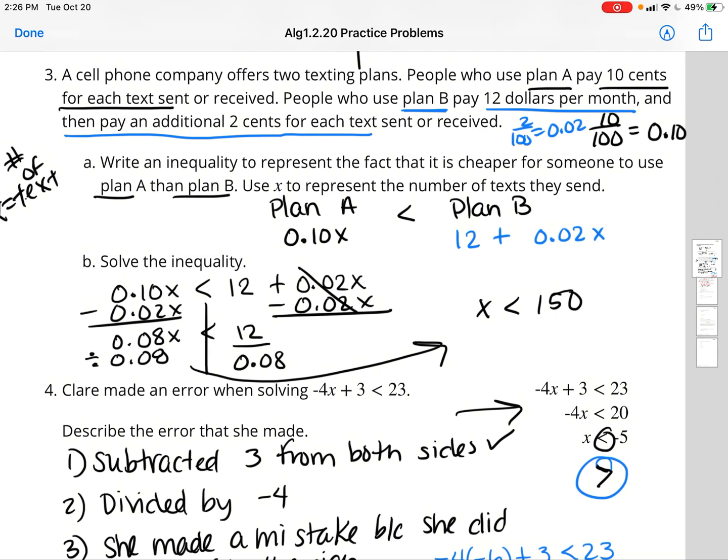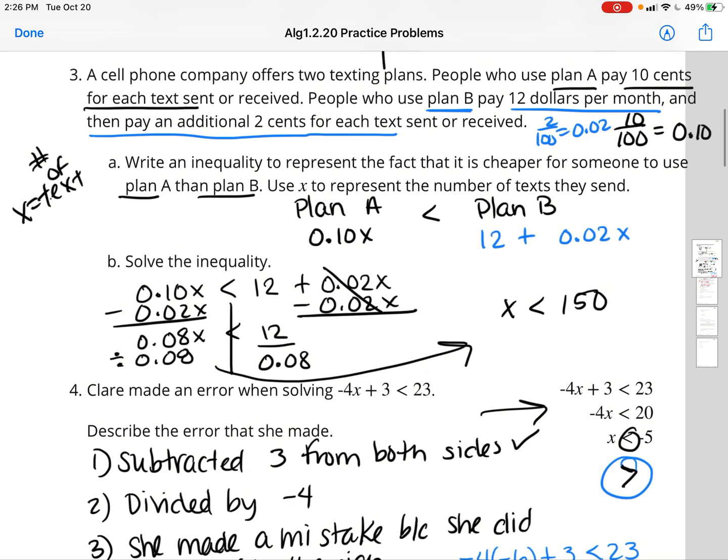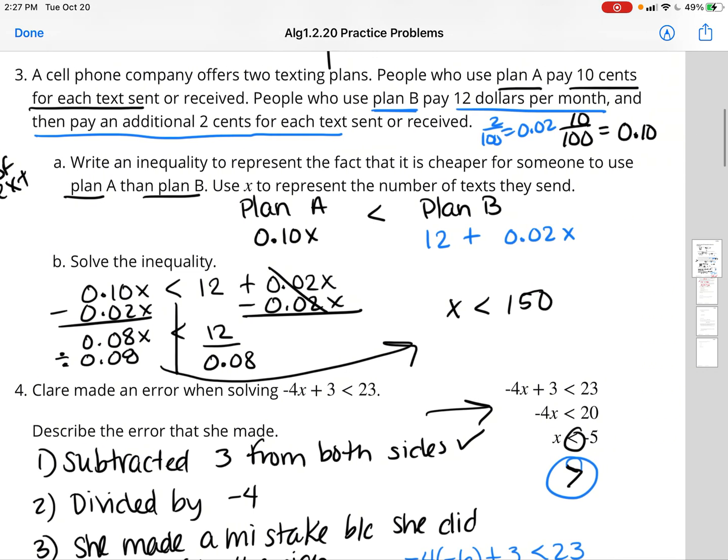Number three is similar to what you guys have for your exit ticket for this week. This one is talking about a cell phone company. They have two texting plans. This is important when you get older. You want to compare. So plan A is going to just charge you 10 cents for each text. Plan B is going to charge you $12 per month, and then you pay an additional 2 cents for each text.